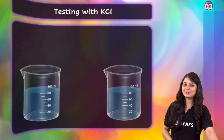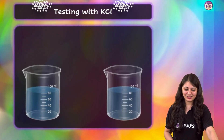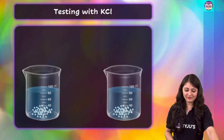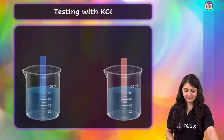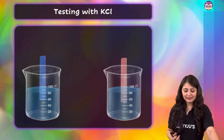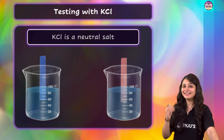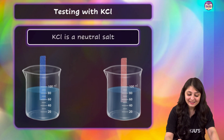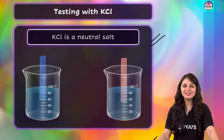Now, what about potassium chloride? Well, check for yourself. Salt added — we are dipping the litmus paper in the respective solutions. Again, no color change. This indicates that KCl is also a neutral salt.